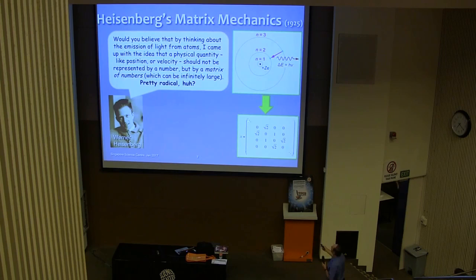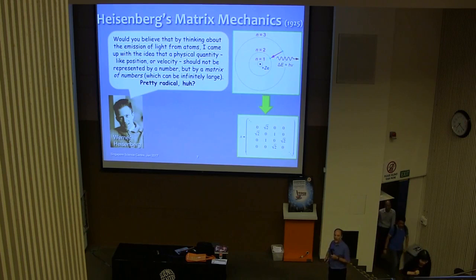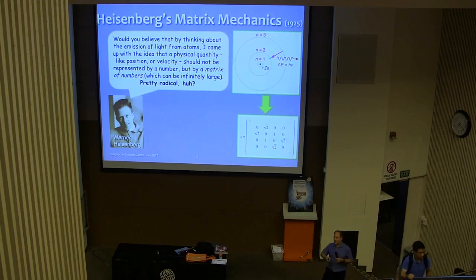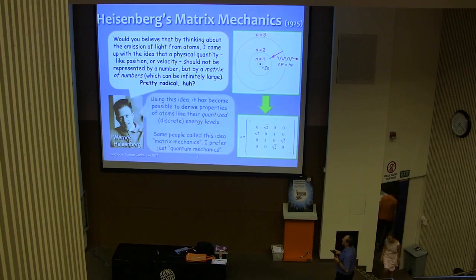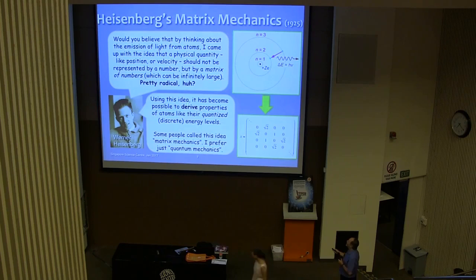So what's a matrix? A matrix is just a square array of numbers like this. So this is an example of a matrix. In this case, it might be infinitely large because these numbers go on to infinity in either direction. And this particular matrix could represent the position of an electron. Seems like a completely crazy idea. What does it even mean to say that the position is not a number, but rather is this enormous array of numbers?